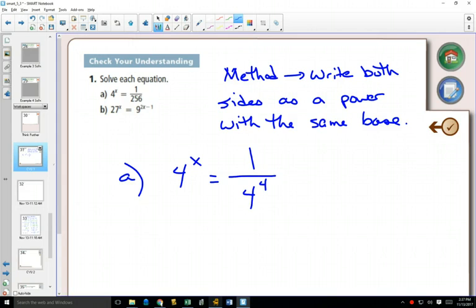But I can write 256 as 4 to the power of 4. So we want to write both sides as a power with the same base. We're not quite there yet, because on the right-hand side, my power of 4 is in the bottom of a fraction. Is there any way that you could move this up so it's just 4 to the power of something? You could do 4 to the power of 0. Oh, and you could change the 1 to a 4 to the power of 0, and then use your exponent laws to subtract.